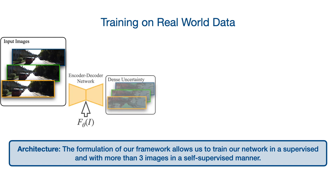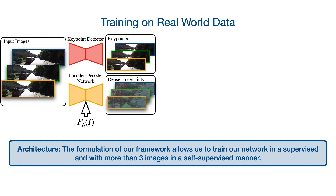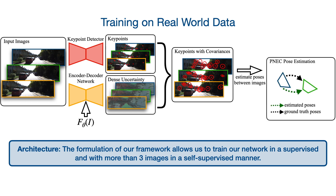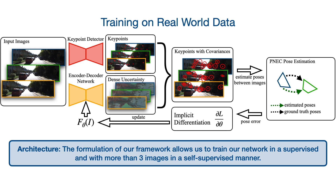Our network learns to predict a dense uncertainty map from images. Combined with keypoint predictions, this produces keypoints with their corresponding uncertainty estimates, which can be used in the probabilistic normal epipolar constraint (PNEC) optimization. We train our network through differentiable nonlinear least squares directly from the pose estimation error. The nonlinear least squares formulation of the PNEC allows us to use implicit differentiation to determine the gradient of the pose error with regard to uncertainty estimates, which is then used to train the network to predict better positional uncertainties that reduce the pose estimation error.